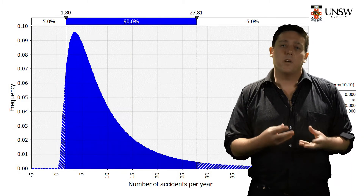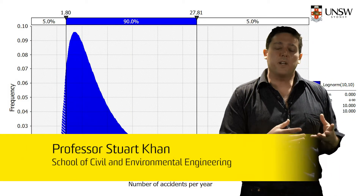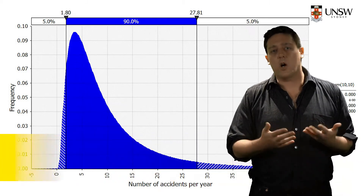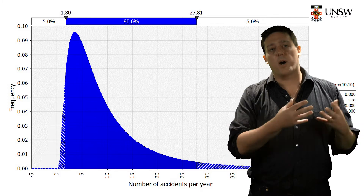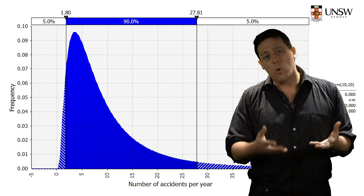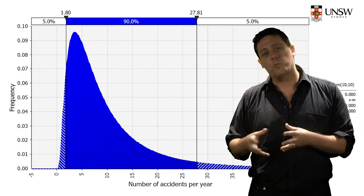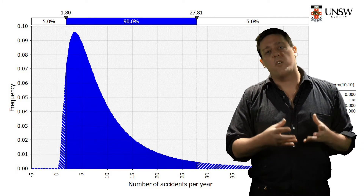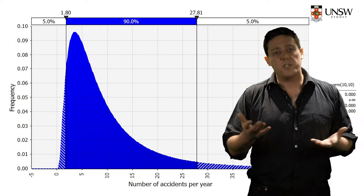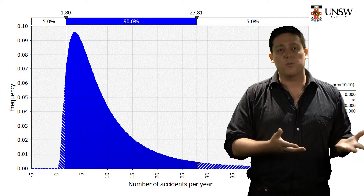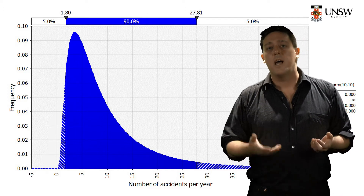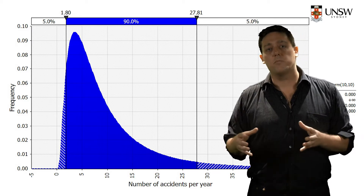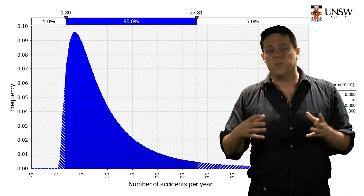In the previous class, we learnt about probability density functions, or PDFs, and we looked at various types of PDFs, including binomial distributions, normal distributions, and log normal distributions. We saw that we could model the probability of a particular outcome, such as the number of tails results in five coin flips, as a PDF, relating the range of various possible outcomes to the expected frequency of occurrence.